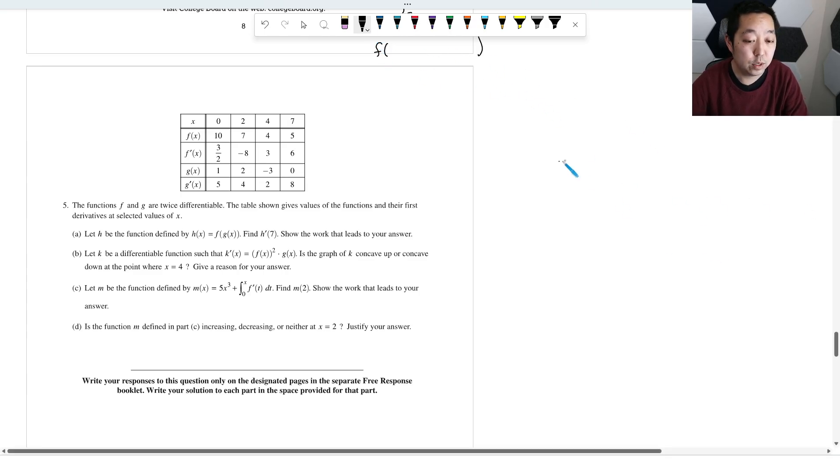Alright, so let's take a look at number 5 on the AB exam from AP Calculus for 2023. As usual, I don't have the solutions available, so I'm just going with my answers and how I would work them out. If I make any mistakes or if there are any corrections, I will put it in a pinned comment.